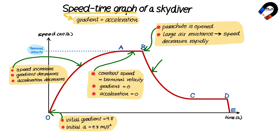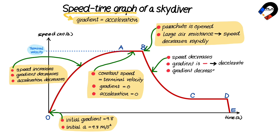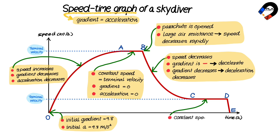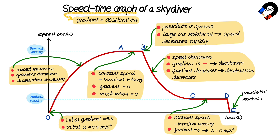Between B and C, the speed decreases and the gradient is negative, which means that the acceleration also decreases. Between C and D, the speed is constant, which is terminal velocity. The gradient is 0, which means that the acceleration is 0. The parachutist reaches the ground at point E.